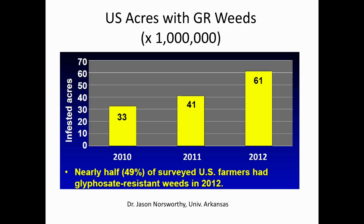The U.S. situation isn't a lot better. This is a map from Jason Norsworthy at the University of Arkansas showing millions of acres with a glyphosate-resistant weed species. In just two years, it went from 33 million acres with a species to 61 million acres, meaning almost half of all surveyed U.S. farms have a glyphosate-resistant weed.